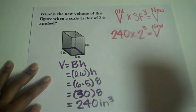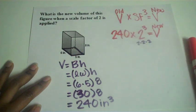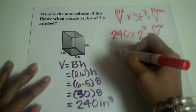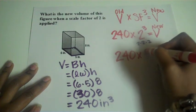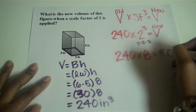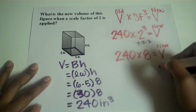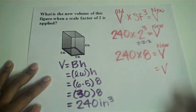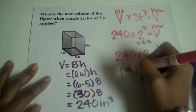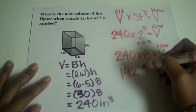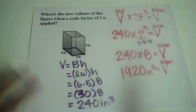Remember, 2 cubed is 2 times 2 times 2. So that means that we'll actually be multiplying that old volume 240 times 8 to get our new volume. And that new volume works out to be 1920 inches cubed.